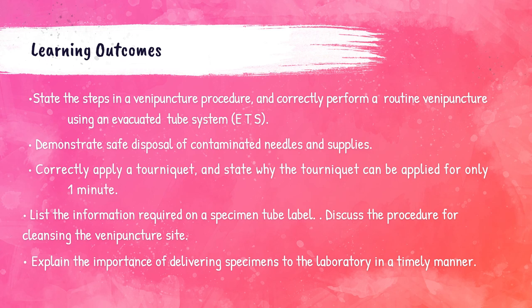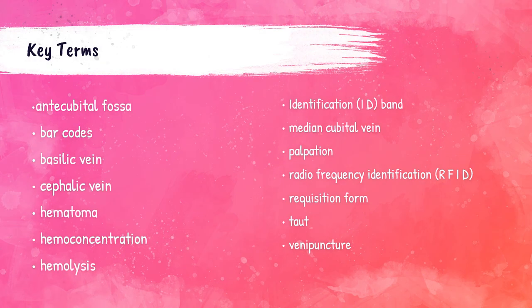After watching this lecture recording you'll be able to state the steps in a venipuncture procedure, correctly perform a routine venipuncture using an evacuated tube system, demonstrate safe disposal of contaminated needles and supplies, list the information required on a specimen tube label, and explain the importance of delivering specimens to the laboratory in a timely manner. Key terms include: antecubital fossa, barcodes, basilic vein, cephalic vein, hematoma, hemoconcentration, hemolysis, identification band, median cubital vein, palpation, radio frequency identification (RFID), requisition form, TOT, and venipuncture.